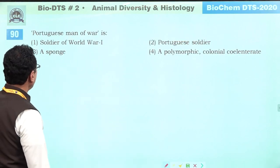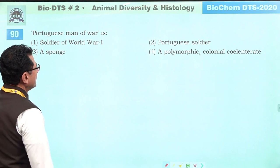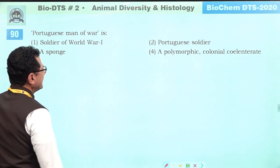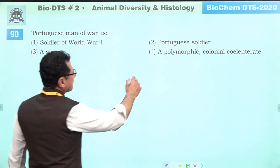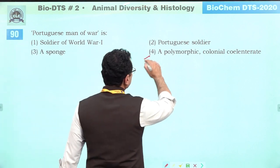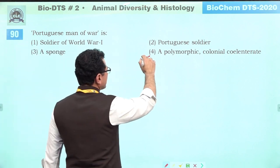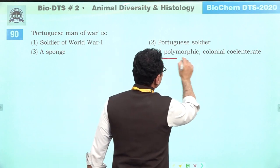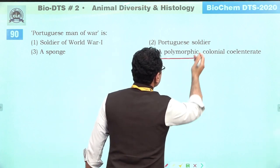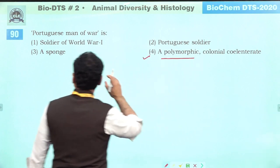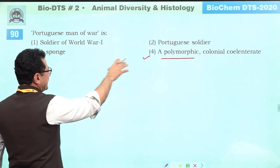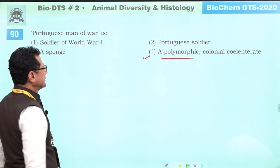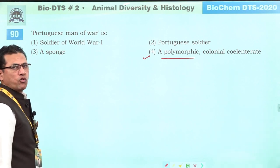Portuguese man-of-war is a cnidarian — it is polymorphic with many types of zooids. It is not a soldier, not a sponge. It is a cnidarian. Answer is four.